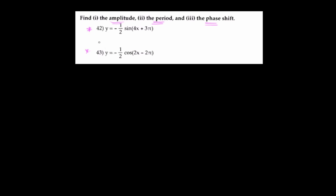For question 42, we're given y equals negative half sine of 4x plus 3pi. We want to find the amplitude, the period, and the phase shift.